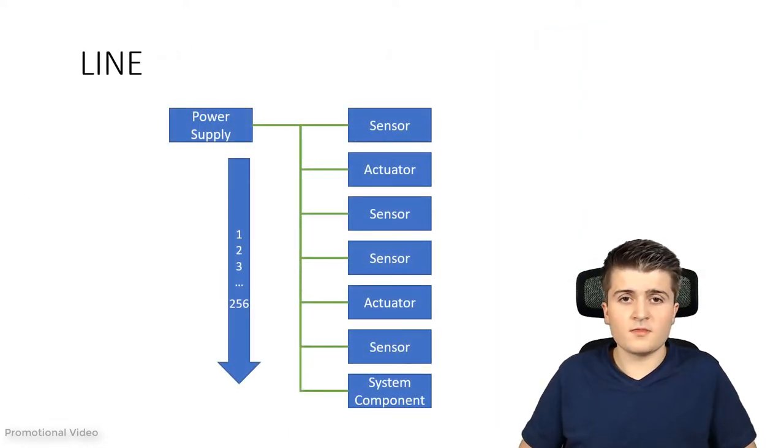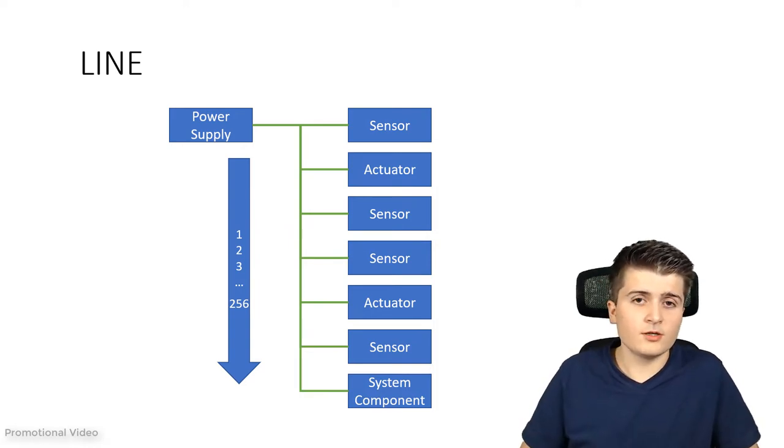First of all let's take a look at the smallest unit, the so-called line. The structure of the line is pretty simple. We just connect all of our KNX devices together via the same bus wire. In the end we have all of our KNX devices connected to the same bus wire and then they can communicate with each other as long as there is a power supply.